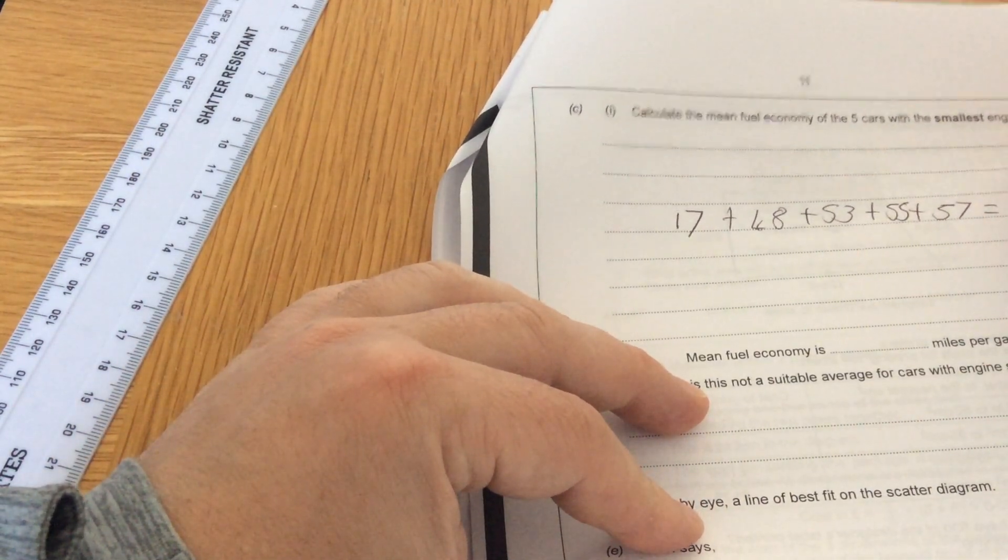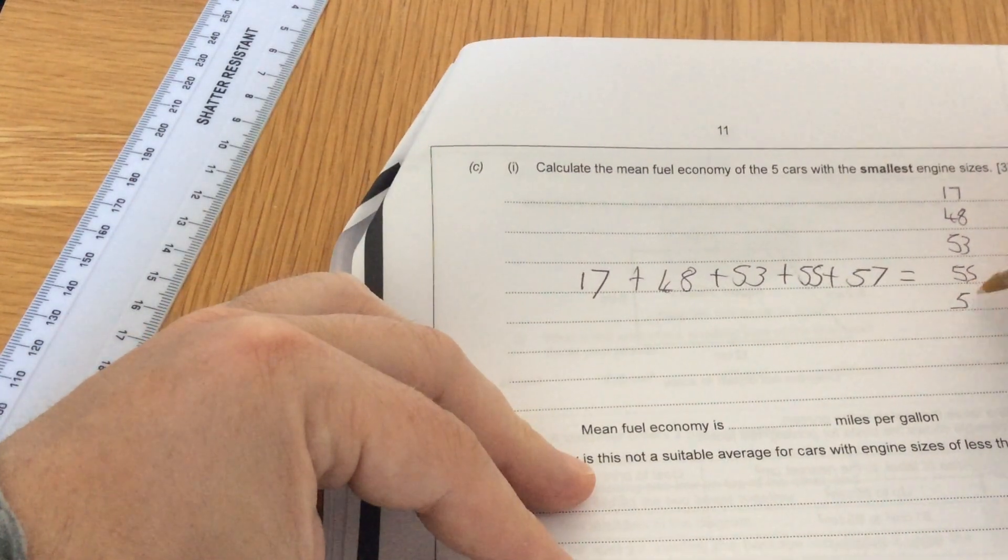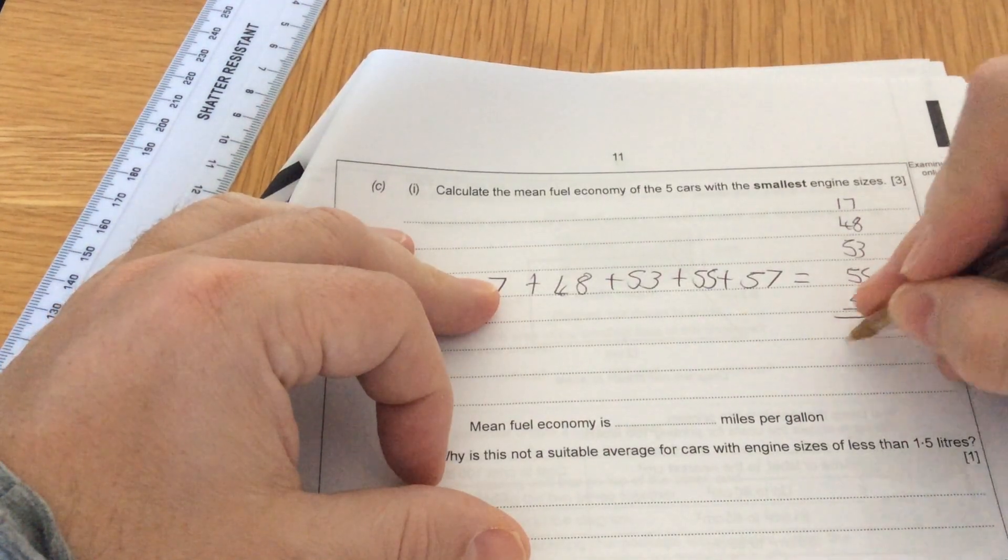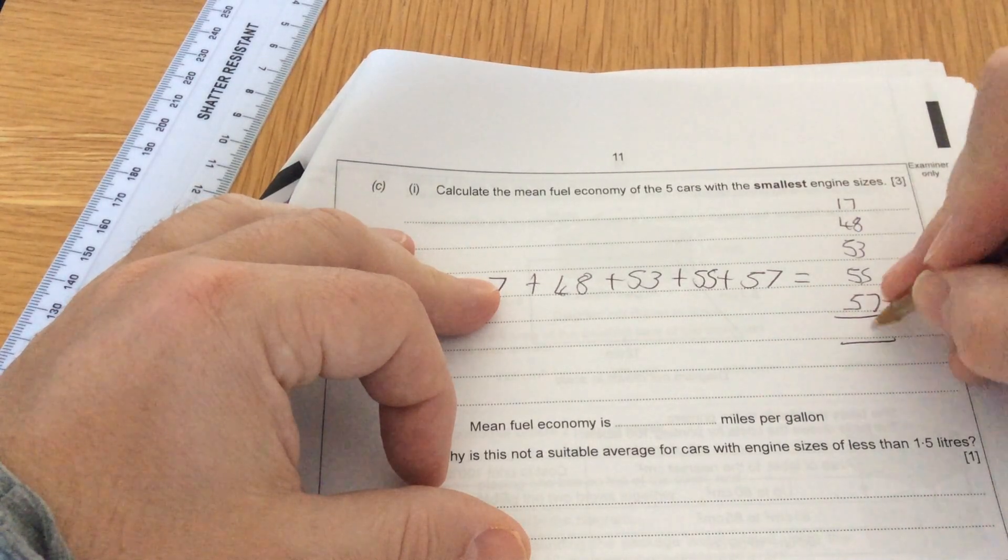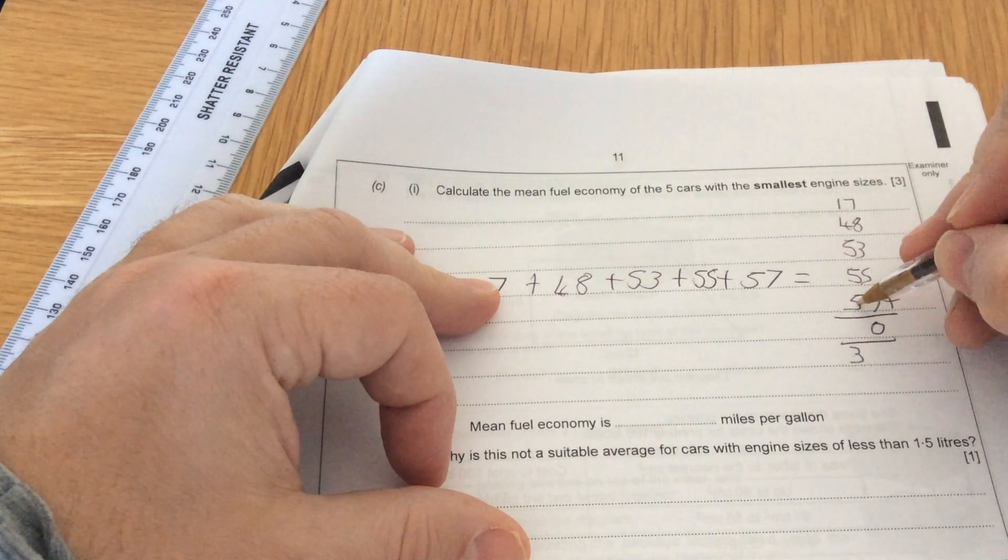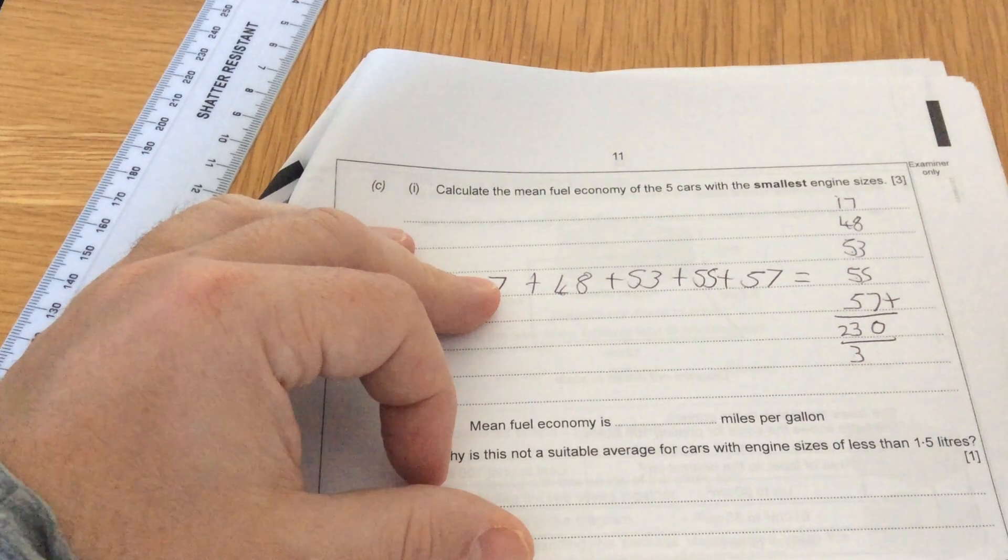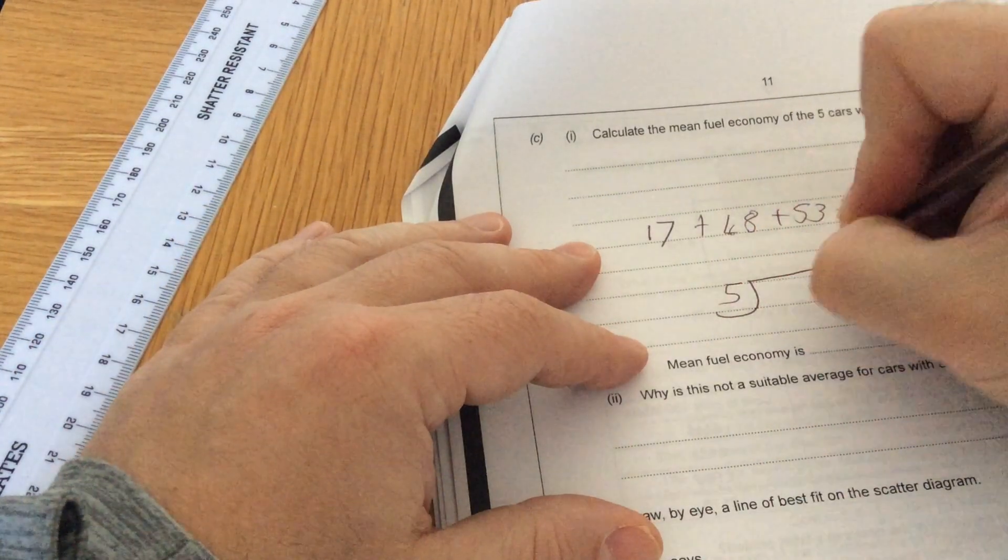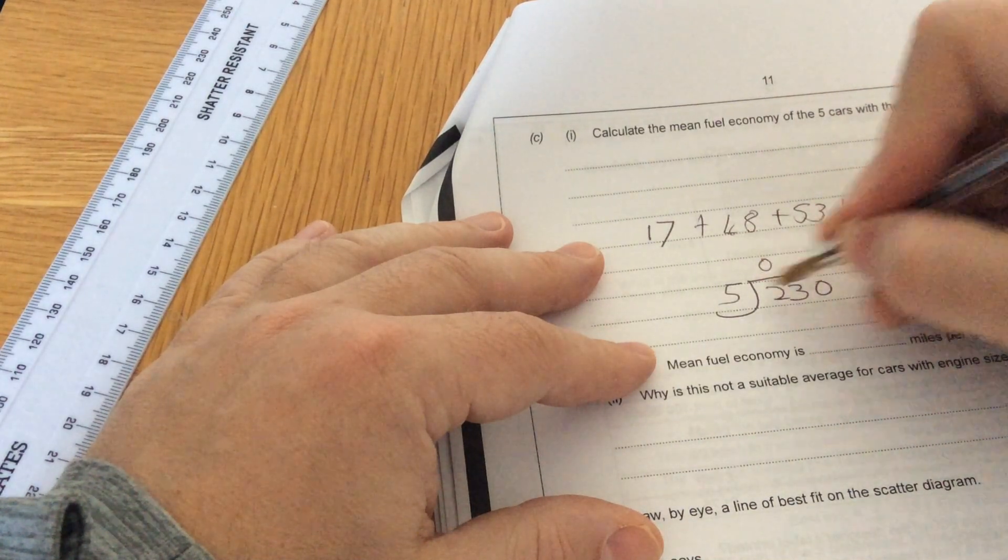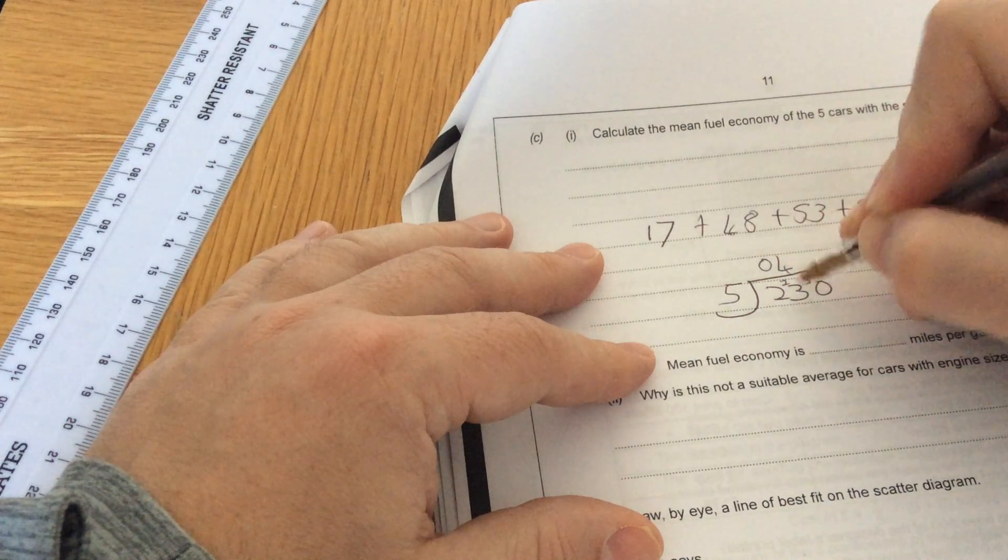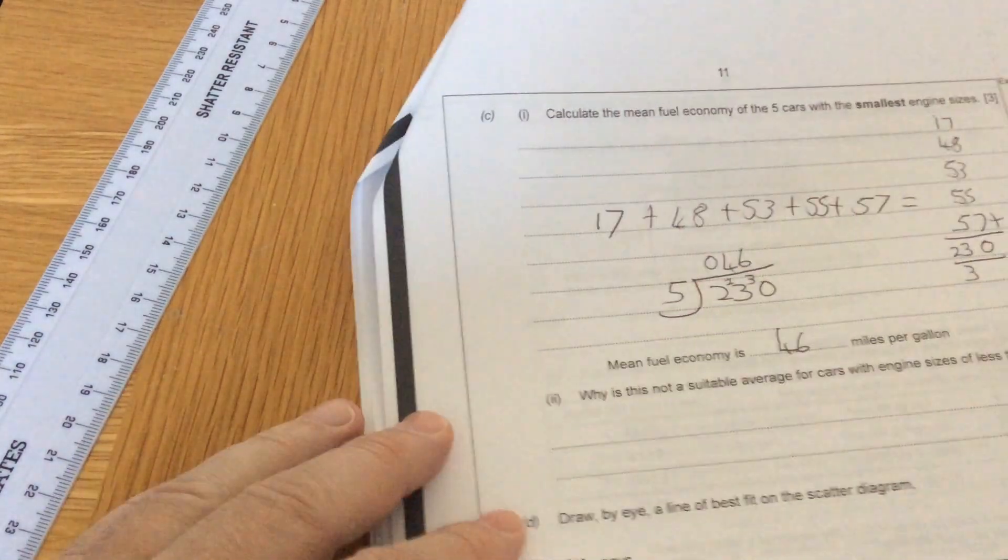So let's line them up: 17, 48, 53, 55, 57. Start on the units: 7, 12, 15, 23, 30. Note down carry the 3. Then 3, 8, 13, 18, 22, 23. So the total is 230. So I'm going to do how many fives in 230. 5 into 2 don't go, note down carry the 2. 5 into 23, 4 times, 3 left over. 5 into 30, 6 times. So the answer to that is 46 miles per gallon.